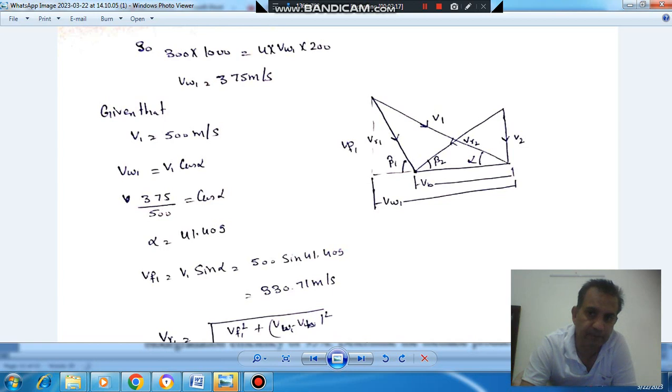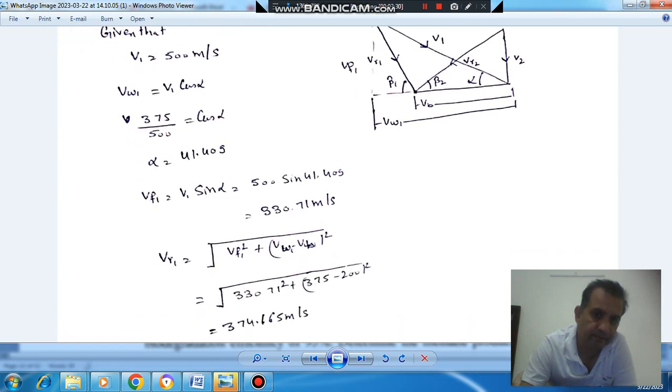So V1 is given as 500 m per second. So VW1 will be V1 cos alpha. So VW1 we have calculated. So nozzle angle, tan alpha = VF1 / VW1.